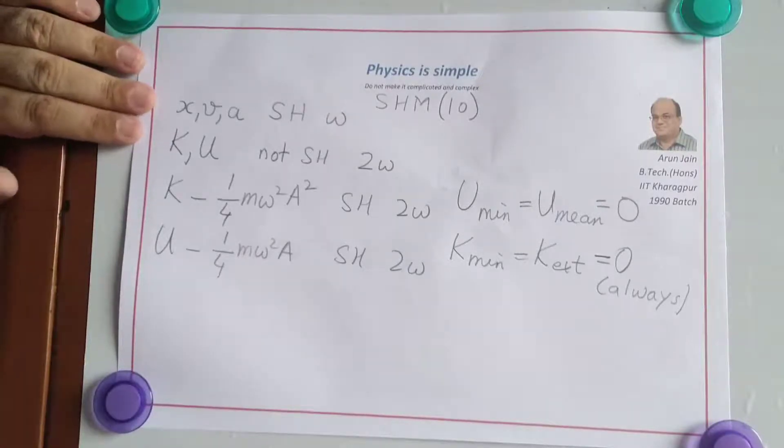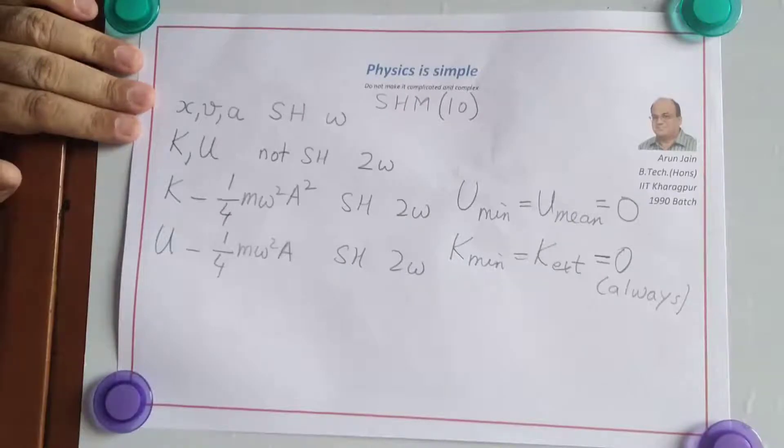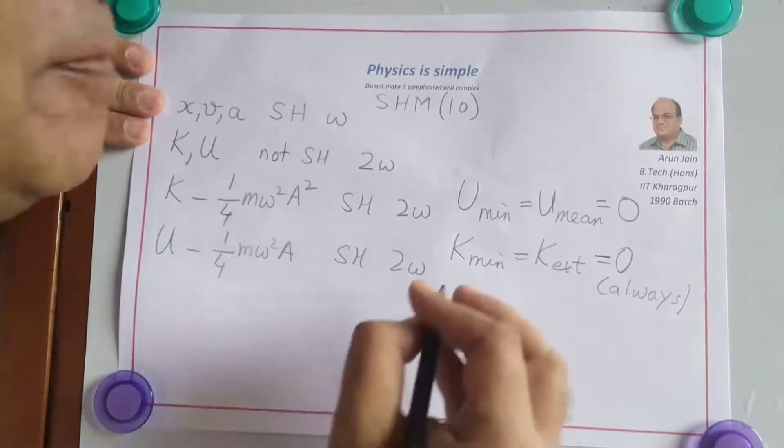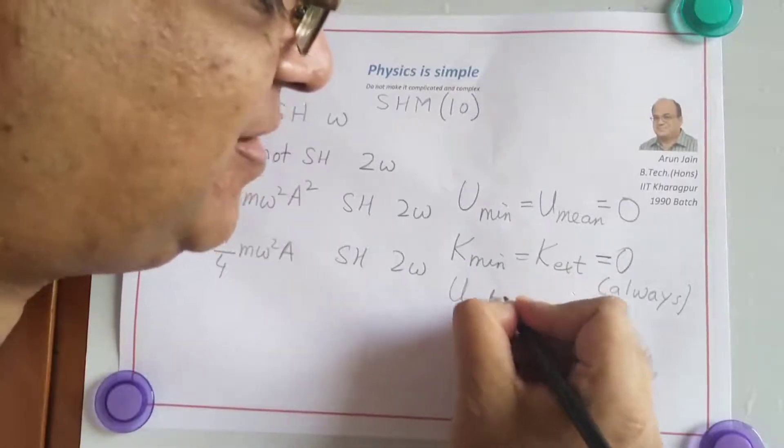At extreme position, kinetic energy is 0 and therefore potential energy is maximum.